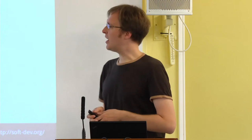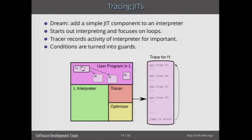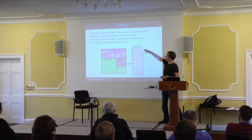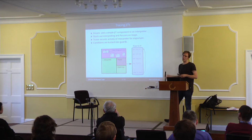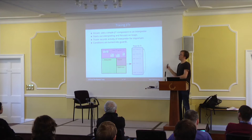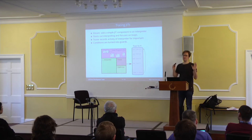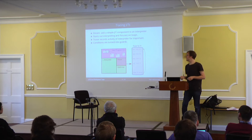So that's basically what it looks like: you take your interpreter, you write a small component at the side that is able to observe the interpreter, and then you need an optimizer on the back end. The dream was that most of the semantics and runtime can be shared with the interpreter. The trace is basically a log of bytecodes until you've reached a point you've seen earlier in the trace — so you close the trace, loop it back to the beginning, and ship it off to the optimizer. You get a nice piece of native code that's great and fast.